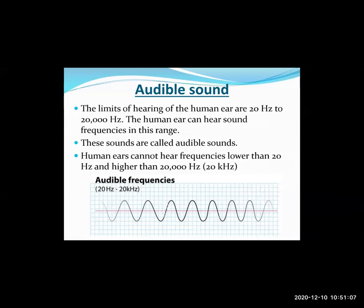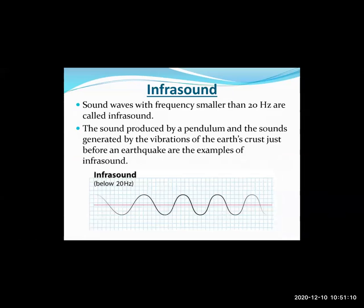Sound waves with a frequency smaller than 20 hertz are called infrasounds. These sounds are produced by objects vibrating less than 20 times per second, giving a frequency of less than 20 Hz. Examples include the sound produced by a pendulum and the vibrations of the earth's crust just before an earthquake. Certain animals like elephants and some species of dogs can sense these sounds with frequencies less than 20 hertz.